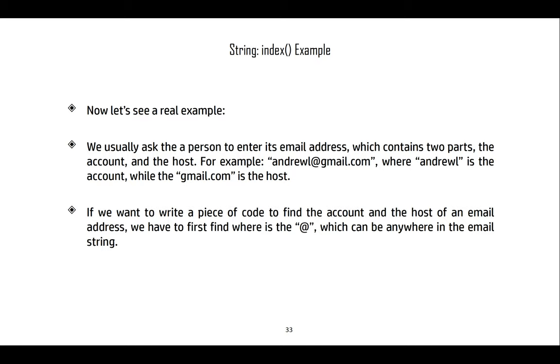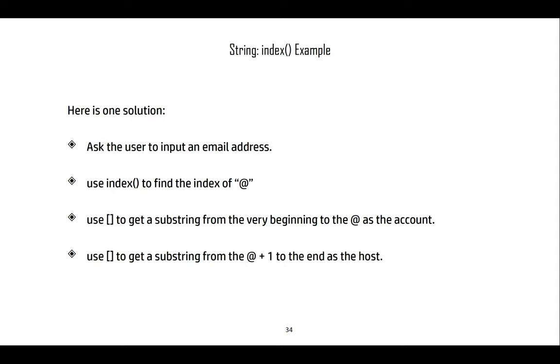Now let's see a real example. I have email addresses and I ask for the email address of a user, and then I want to know what the username and the host is. I can use the index function to get the proper index and then separate the string into two substrings. Ask the user to input the email address, use the index to get the at symbol, use the indices to get a substring before the at symbol, and then whatever is after.